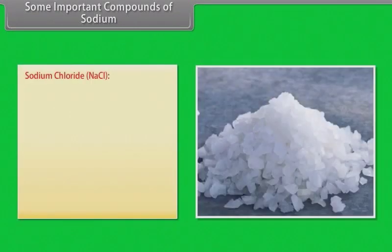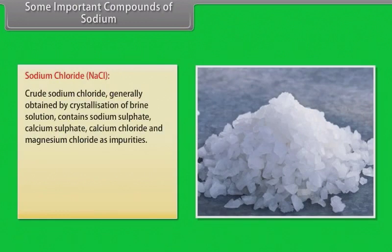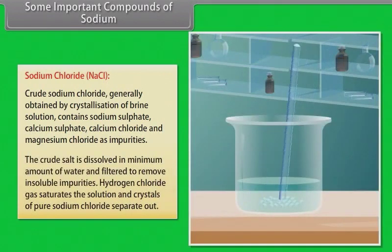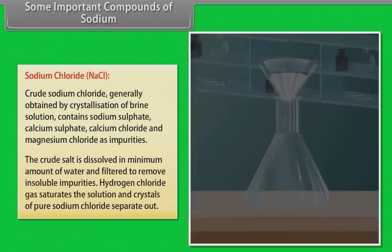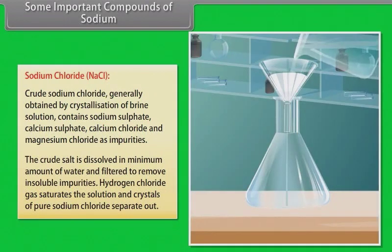Sodium chloride. Crude sodium chloride generally obtained by crystallization of brine solution contains sodium sulfate, calcium sulfate, calcium chloride and magnesium chloride as impurities. The crude salt is dissolved in minimum amount of water and filtered to remove insoluble impurities. Hydrogen chloride gas saturates the solution and crystals of pure sodium chloride separated out.